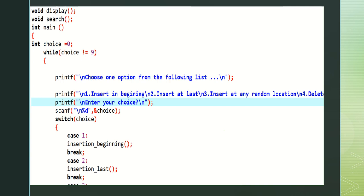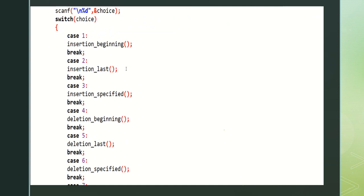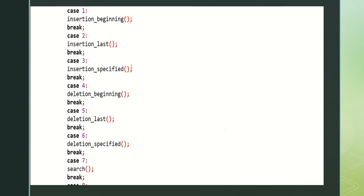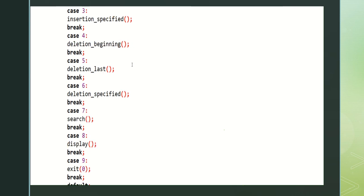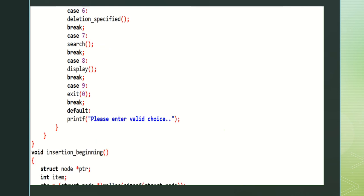Switch of choice — the switch statement is used to execute the test cases. The cases are: case 1 insertion beginning, case 2 insertion last, case 3 insertion specified, case 4 deletion beginning, case 5 deletion last, case 6 deletion specified (which means random), case 7 search, case 8 display, case 9 exit. After every case, a break statement is used.